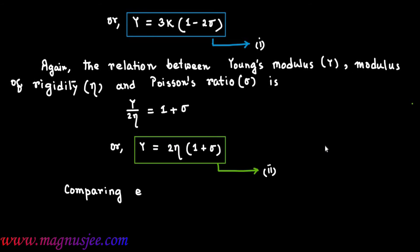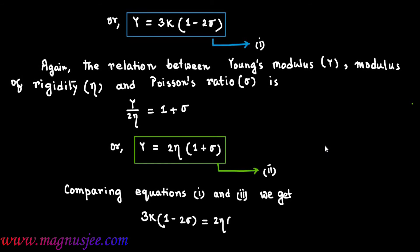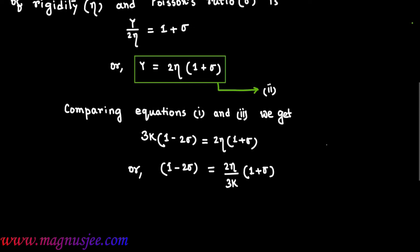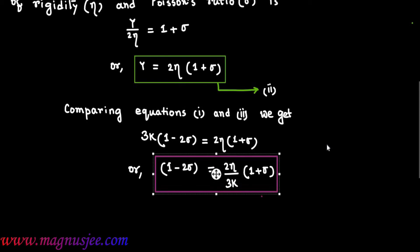Comparing equations 1 and 2, we get 3K into (1 minus 2 sigma) equals 2 eta into (1 plus sigma), or 1 minus 2 sigma equals 2 eta divided by 3K into (1 plus sigma). This is equation 3.